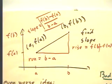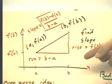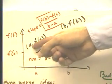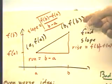The problem that's posed here is to find the slope of the line between the points A, F of A, and B, F of B.